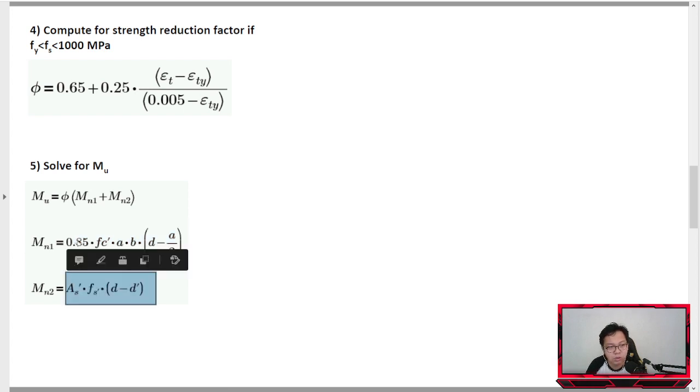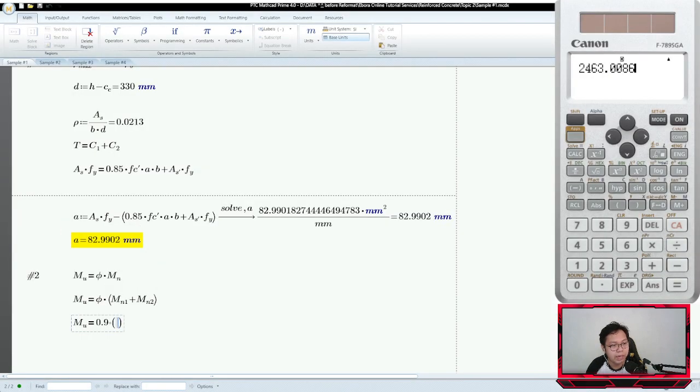It's very easy now. However, instead of using 0.85 - this is C1 - actually we don't have AS1. So MU equals phi 0.9 multiplied by MN1. MN1 is 0.85 times Fc prime times A times B, and the moment arm is D minus A over 2. This is very important - the moment arm, don't interchange the moment arm.